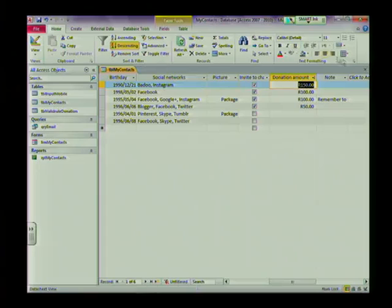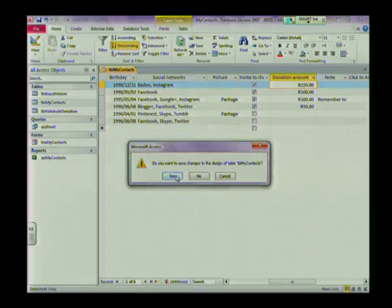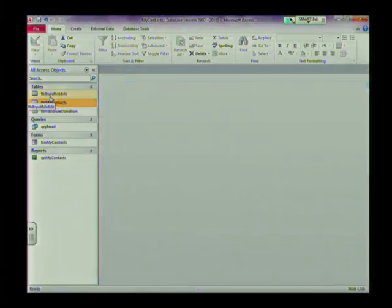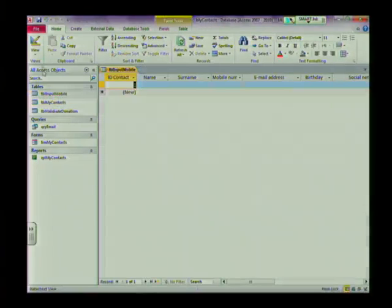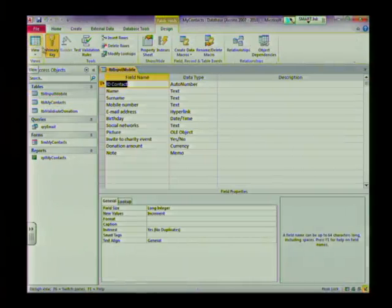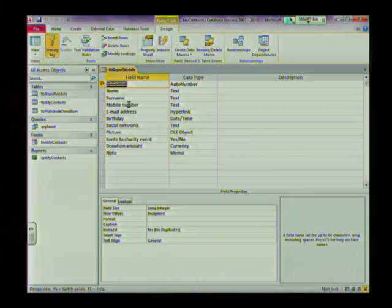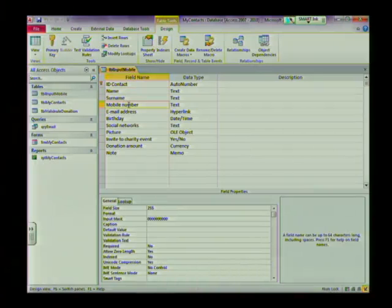There are some other more advanced options that you can use to make sure that the data entered is valid. And we're going to look at those now. Firstly, we're going to look at something called an input mask. To do this, I'm going to open a new table. So let me close the current one. And let's move to table input. Going to go to my design view.